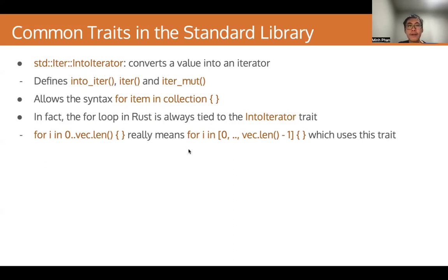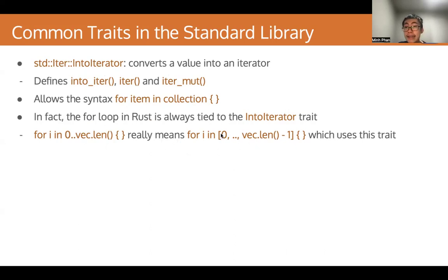In fact, the for loop in Rust is always tied to the IntoIterator trait. So something like for i in 0..vec.len() really means iterating over an array containing values 0 to vec.len() - 1, which is an instance of the for item in collection loop syntax, and so it uses the iterator trait.